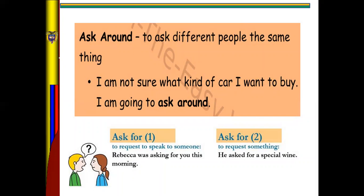Next phrasal verb is ask around — to ask different people the same thing. For example, 'I'm not sure what kind of car I want to buy, so I am going to ask around.'